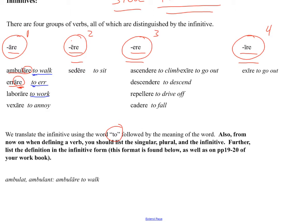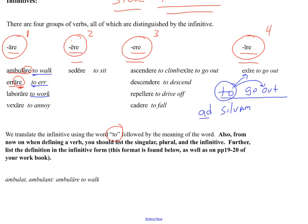We have to be careful, because this T-O that's inside of these infinitives is different from this T-O like in 'to the forest' — to or toward the forest. That T-O is specifically for verbs. So if you're talking about 'to' plus a verb, that's an infinitive. 'To' plus a noun is just a preposition.